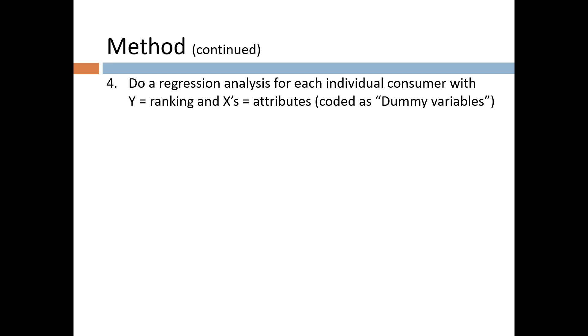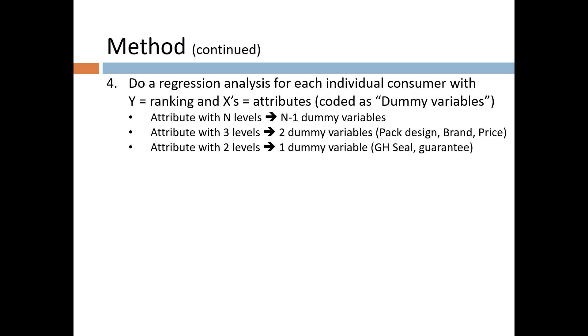Now, keep in mind that because the attributes are not quantitative variables, you have to code them as dummy variables, that is, as zeros and ones. If you recall from our discussion on regression, a categorical variable with n levels requires n-1 dummy variables to represent it. So, attributes that have three levels such as pack design, brand, and price require two dummy variables each. Attributes with two levels require one dummy variable.